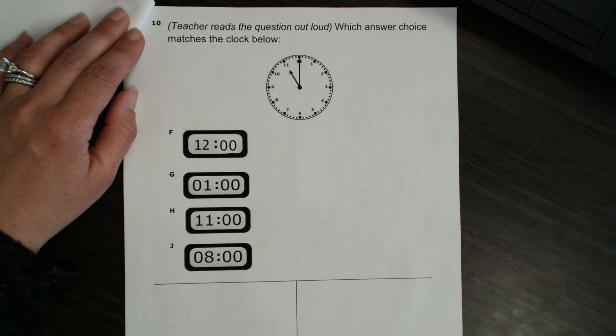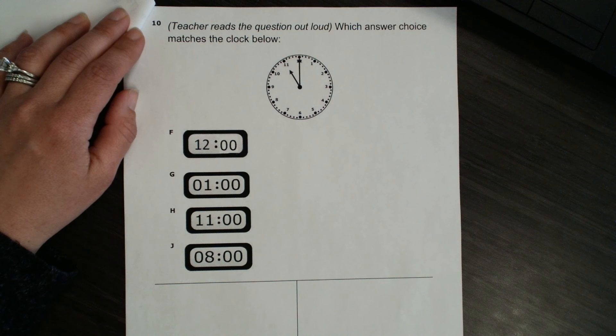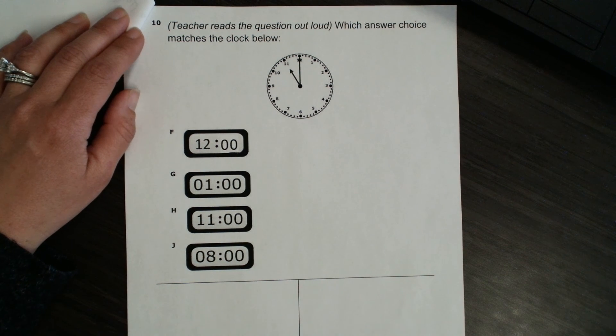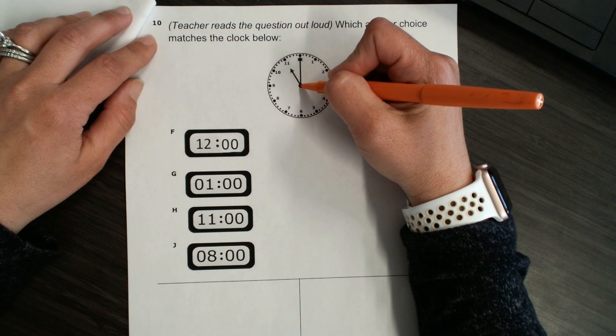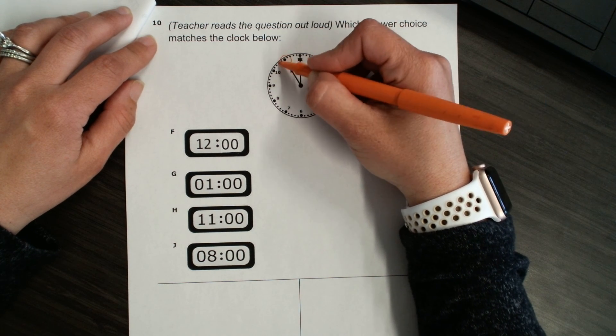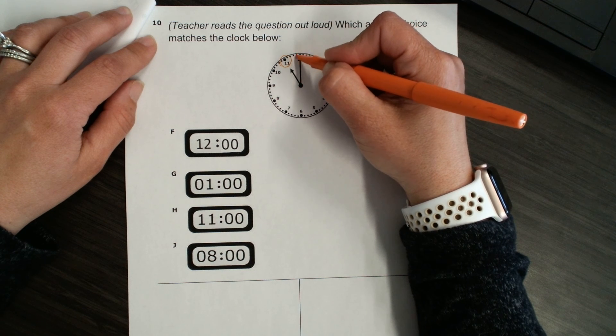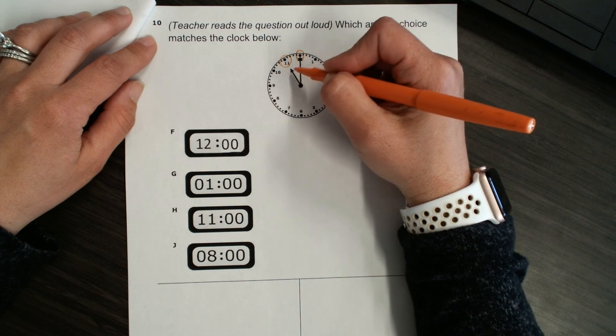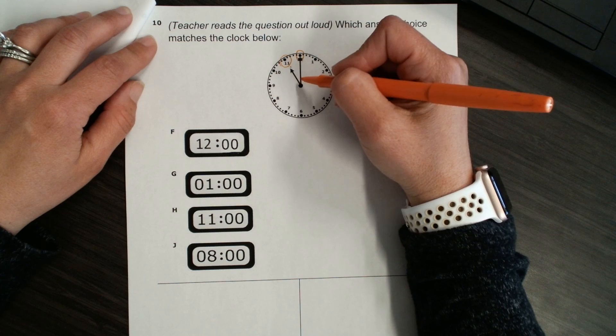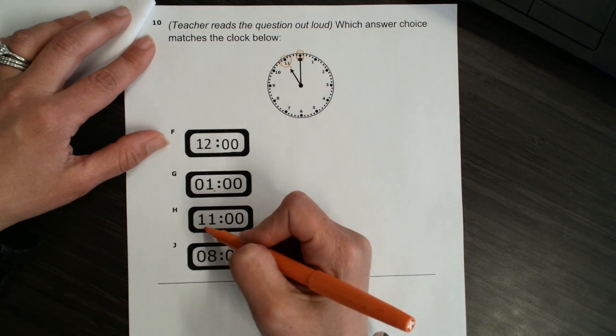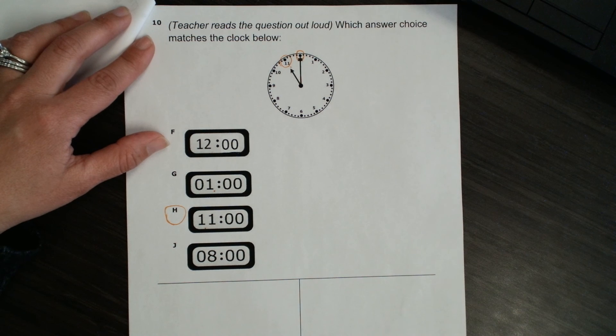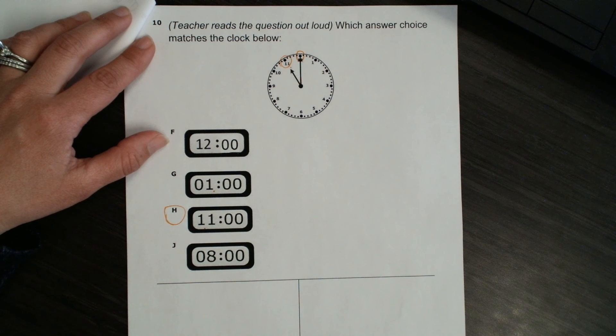Number 10. Which answer choice matches the clock below? Okay. So, first, let's see what time does this say? I'm going to check my hour hand first, and it's pointing right at the 11, and then my minute hand is pointing right at the 12. So, I know that's o'clock. So, we say 11 o'clock. We have 12 o'clock, 1 o'clock. There's 11 o'clock, and that is our answer.